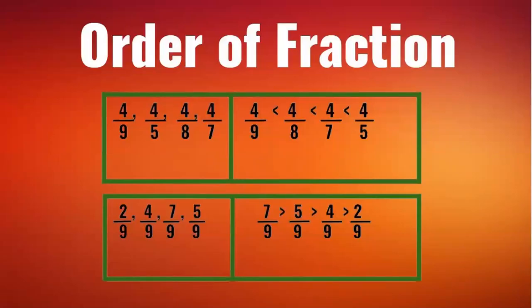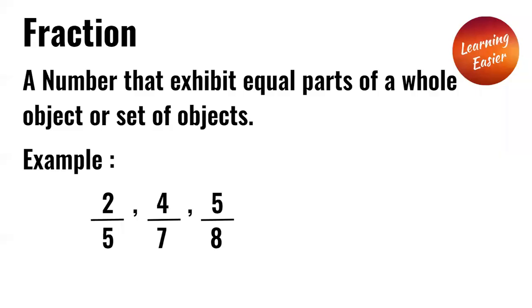Welcome to Learning Easier. Today we're going to learn about the order of fractions. A fraction is a number that represents equal parts of a whole object or a set of objects. Examples include two over five, four over seven, and five over eight.